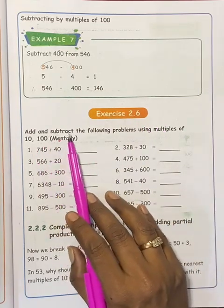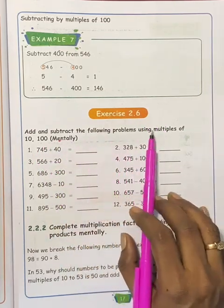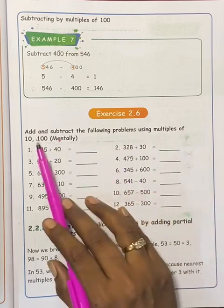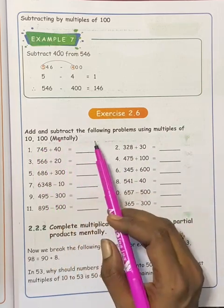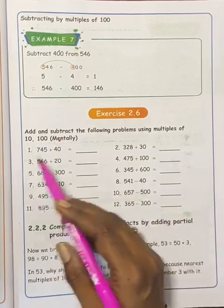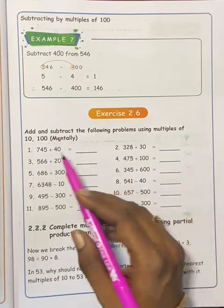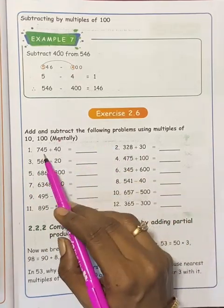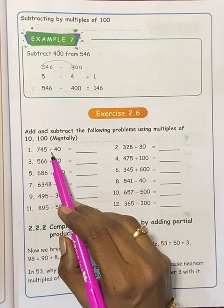Add and subtract the following problems using multiples of 10, 100 mentally. If you add a rough column, we will add straight away. Add or subtract. So first, what is the symbol?